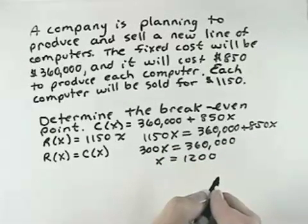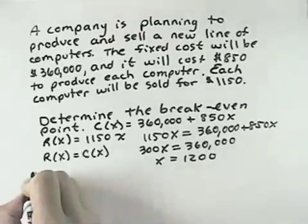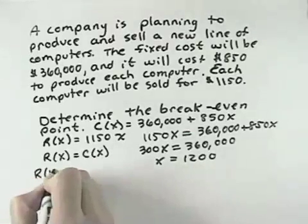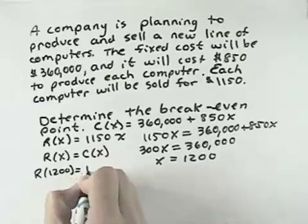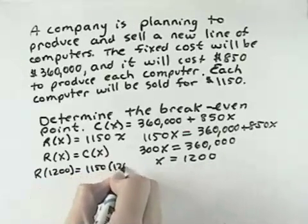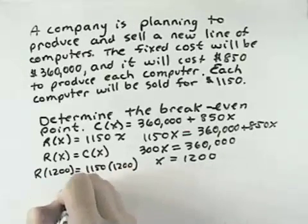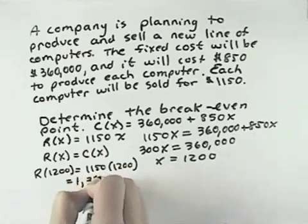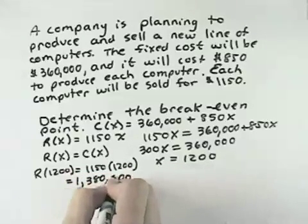So if x equals 1,200, we can go back to the revenue or the cost function. Let's say revenue of 1,200 computers. That would be 1,150 times 1,200 to get the amount of revenue brought in. That would equal $1,380,000.